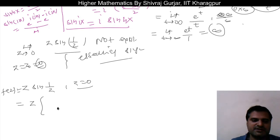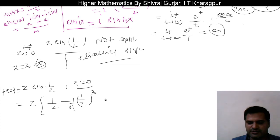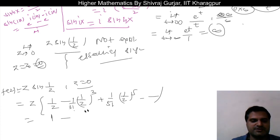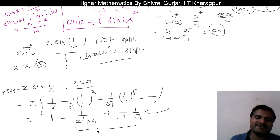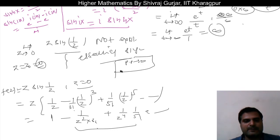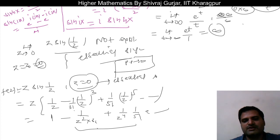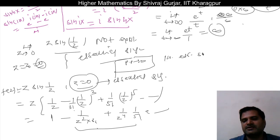To confirm, let us expand f(z) = z·sin(1/z) as a Laurent series. We know sin(w) = w - w³/3! + w⁵/5! - ..., so sin(1/z) = 1/z - 1/(3!·z³) + 1/(5!·z⁵) - ... Multiplying by z gives f(z) = 1 - 1/(3!·z²) + 1/(5!·z⁴) - ... The principal part of this Laurent series has infinitely many terms. Since the principal part of the Laurent series has infinite terms, the singularity is an essential singularity. So z = 0 is an isolated essential singularity of f(z).